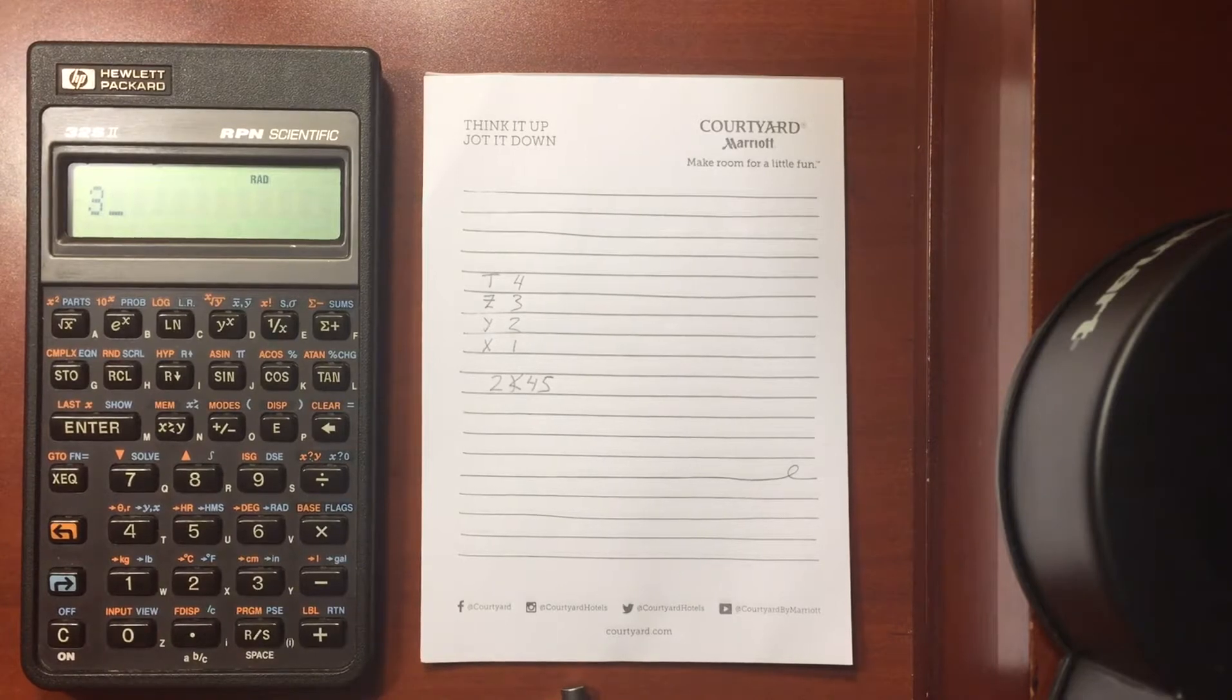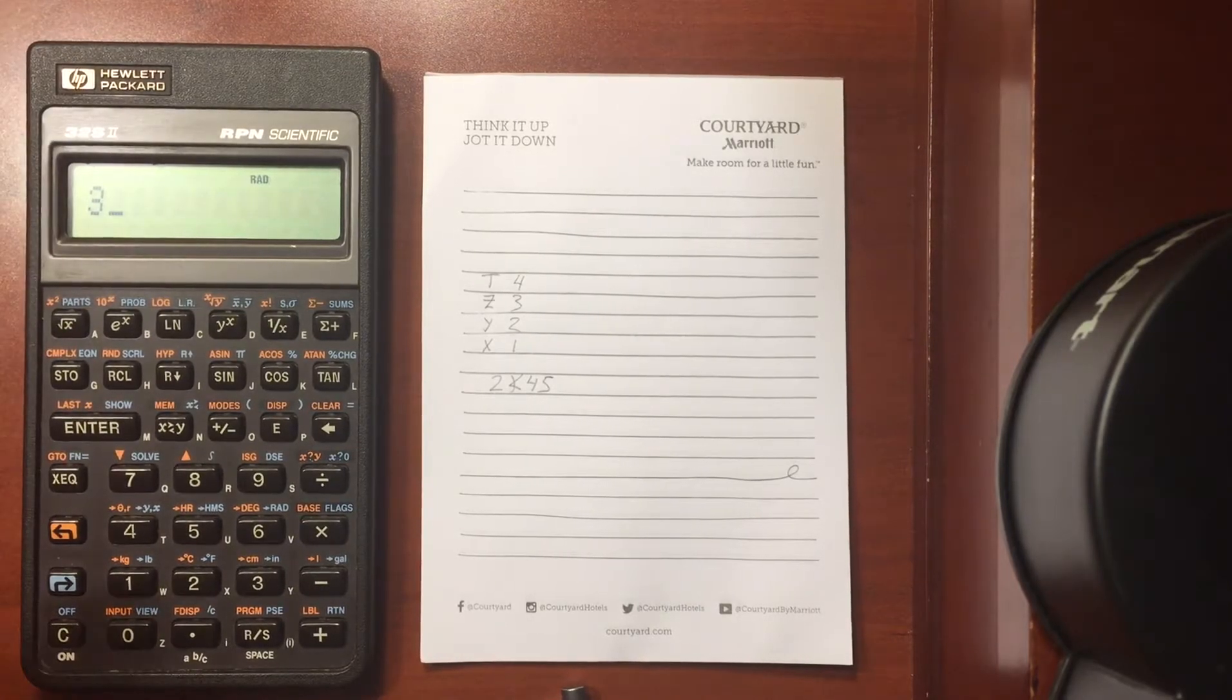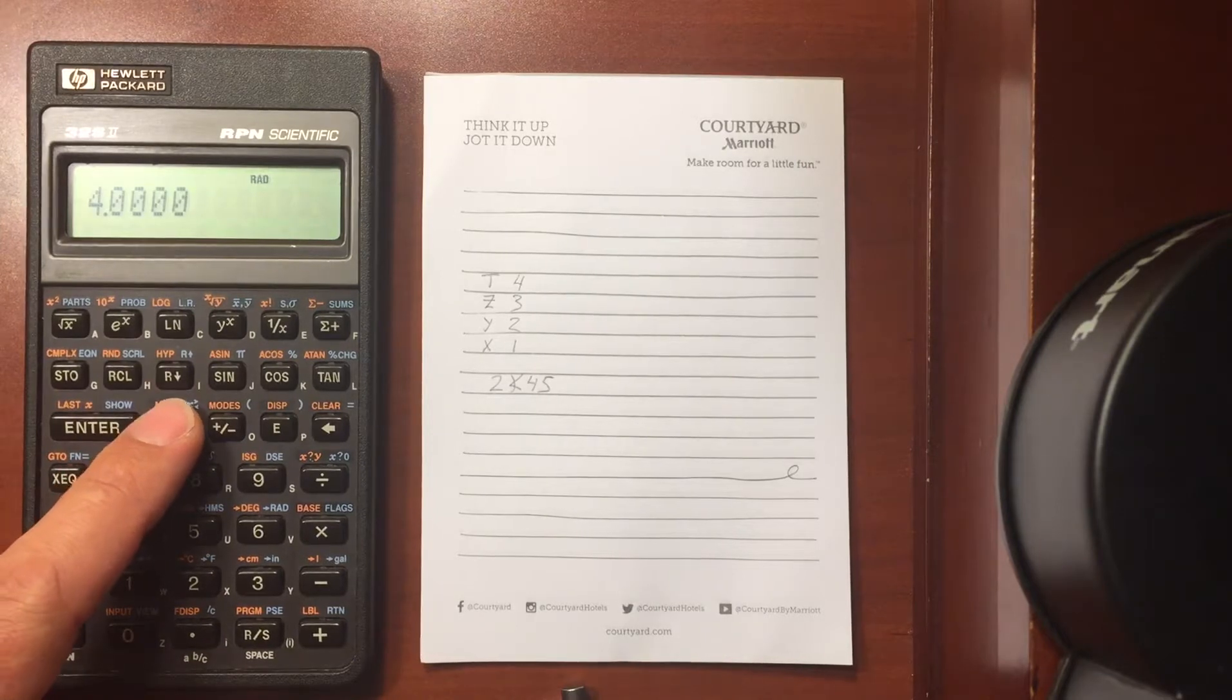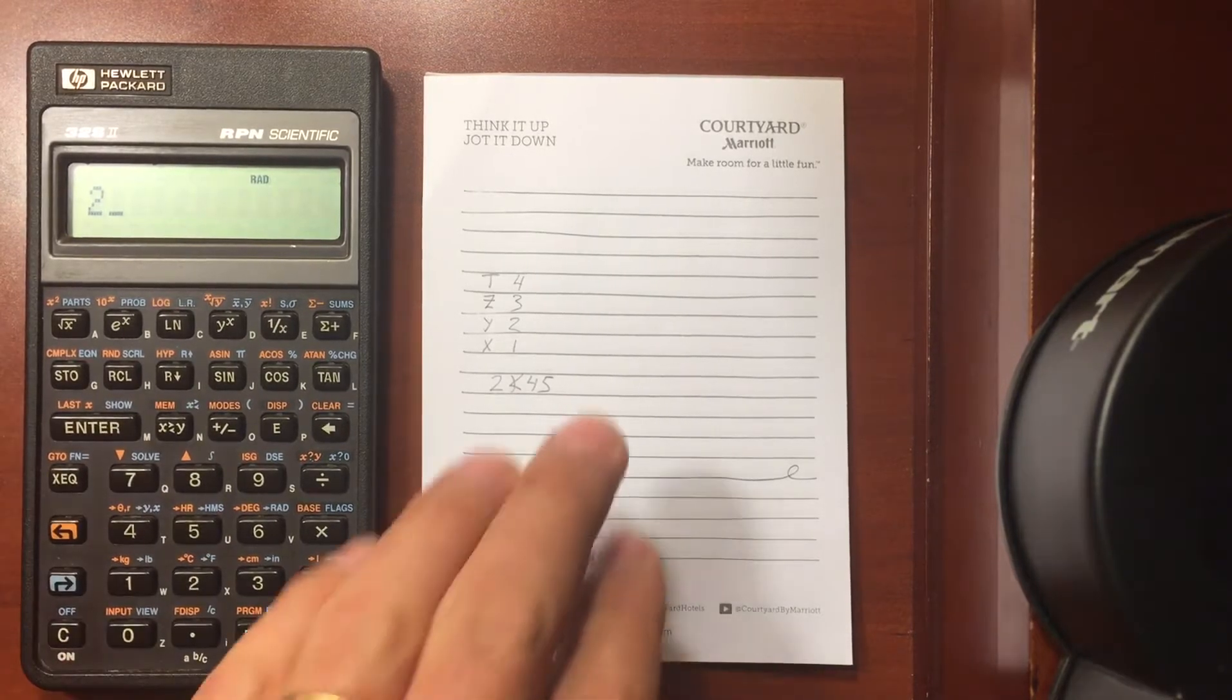Now if I enter in a 3, now I have a 3 in the X register, a 4 in the Y register. And if I swap those back and forth, now I should see the 3 and the 4 swap back. Enter in a 2, and I've just pushed that up further.